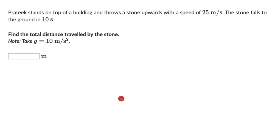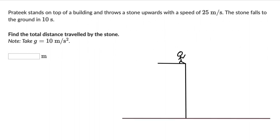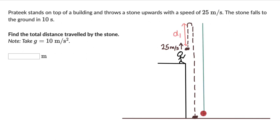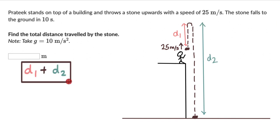Now let's try and draw what's happening in the question. We have someone standing on the top of the building and throwing a stone upwards at a speed of 25 meters per second. The stone goes up and then comes back again and falls to the ground in 10 seconds. We label this upward distance as D1 and this longer downward distance as D2. So we need to figure out D1 plus D2.